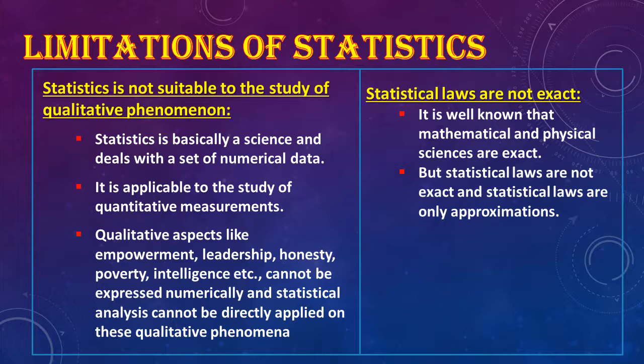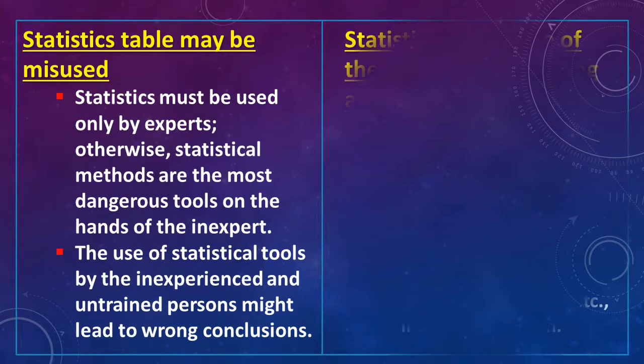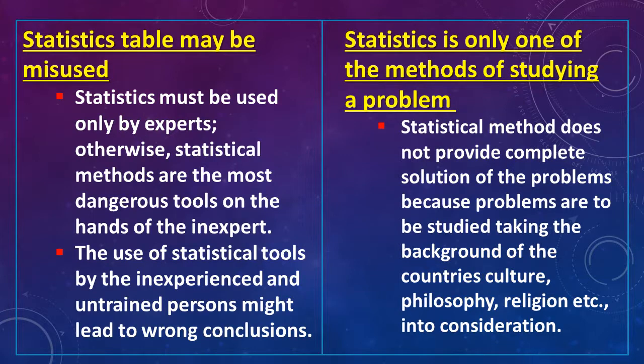Second, statistical laws are not exact. Mathematical and physical sciences are exact (e.g., 1+1=2), but statistical laws are only approximations. Third, statistical tables may be misused. Statistics must be used only by experts; otherwise statistical methods are the most dangerous tools in the hands of the inexpert. The use of statistical tools by inexperienced and untrained persons might lead to wrong conclusions.